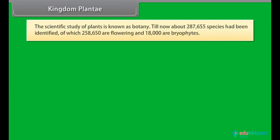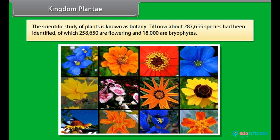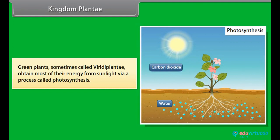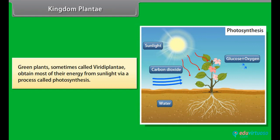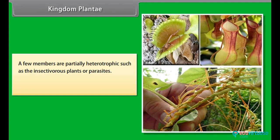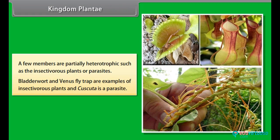The scientific study of plants is known as botany. Till now, about 287,655 species had been identified, of which 258,650 are flowering and 18,000 are bryophytes. Green plants, sometimes called Viridae Plantae, obtain most of their energy from sunlight via a process called photosynthesis. A few members are partially heterotrophic, such as insectivorous plants or parasites. Bladderwort and Venus fly trap are examples of insectivorous plants, and Cuscuta is a parasite.